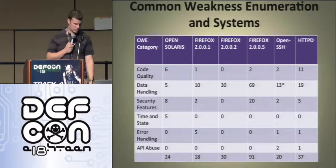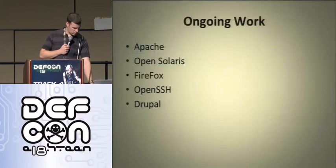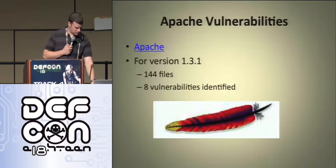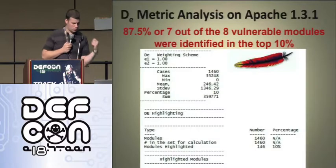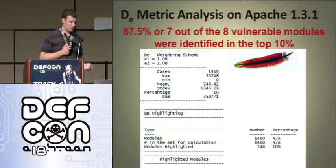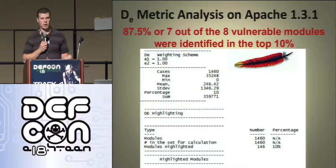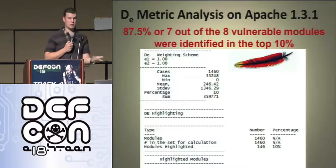So my part was to find exactly where those vulnerabilities were, so when the metrics code ran, we could say the metrics actually identified them. For Apache version 1.3.1, we had 144 files and 8 vulnerabilities identified. With the metrics, we had 87.5% — 7 out of 8 vulnerable modules identified in the top 10%. That's a huge win, because if you're a code auditor wanting to know where to look, being told the top 10% actually contains the vulnerabilities is very helpful.